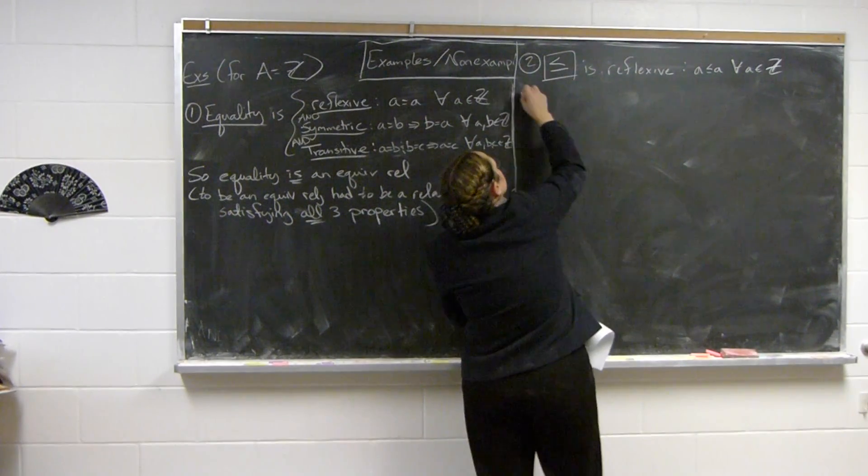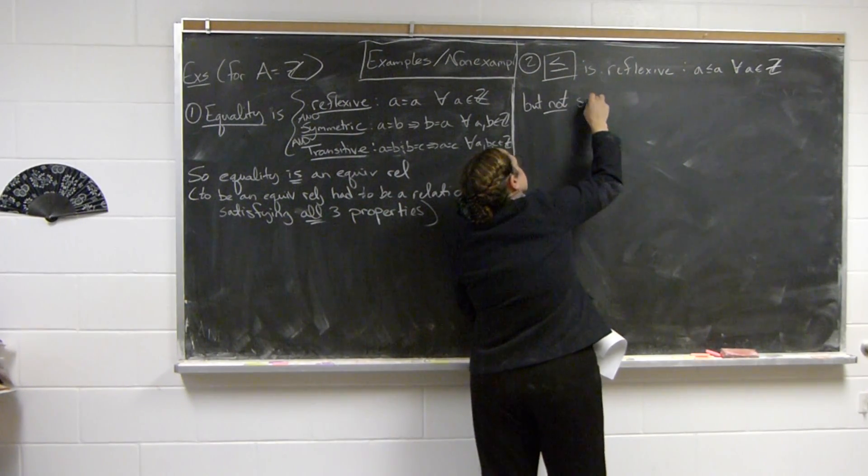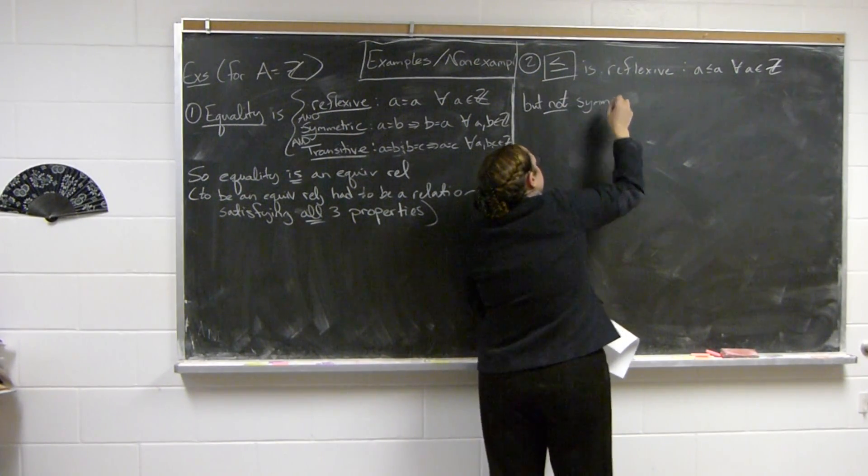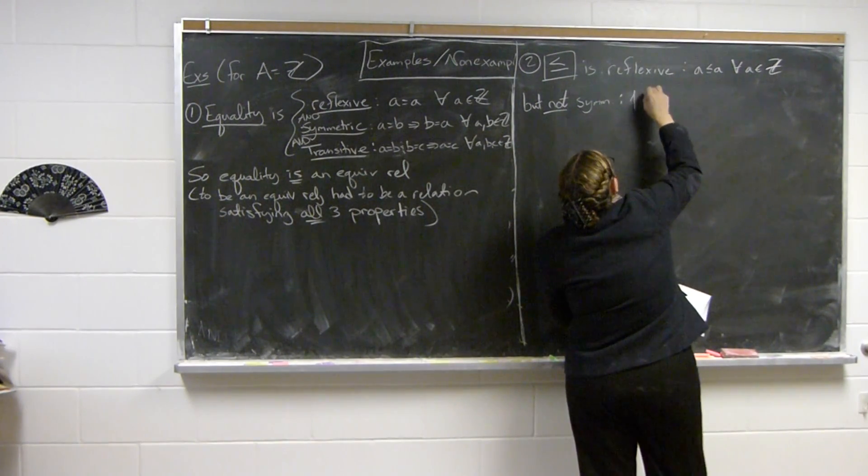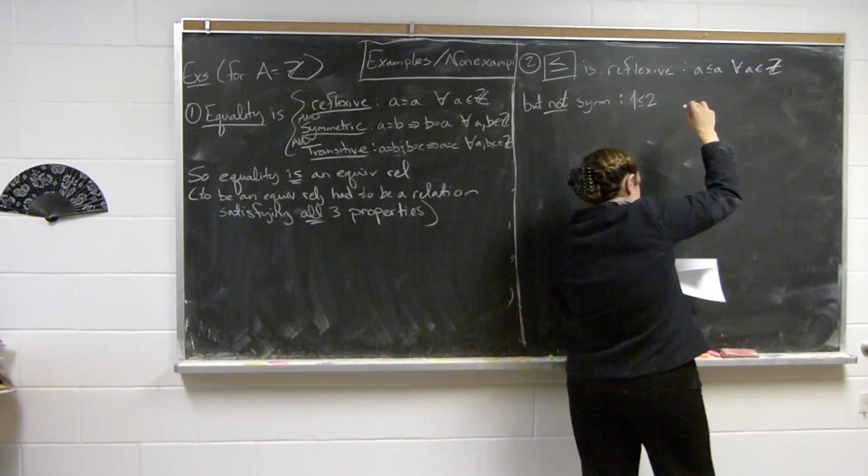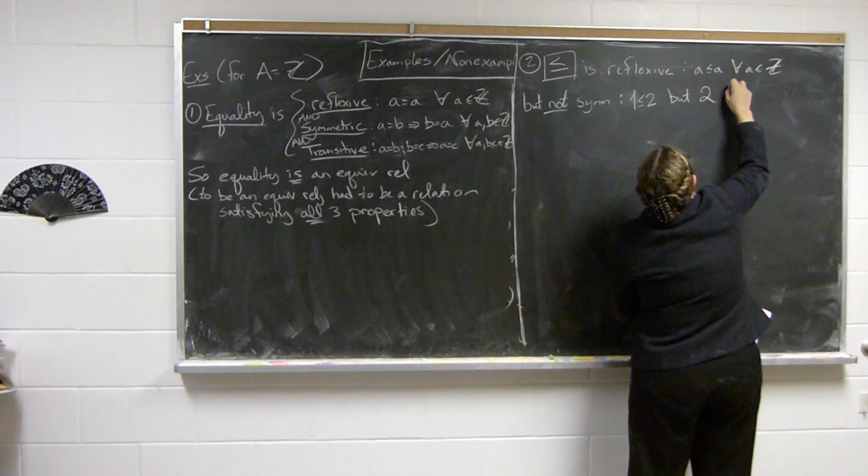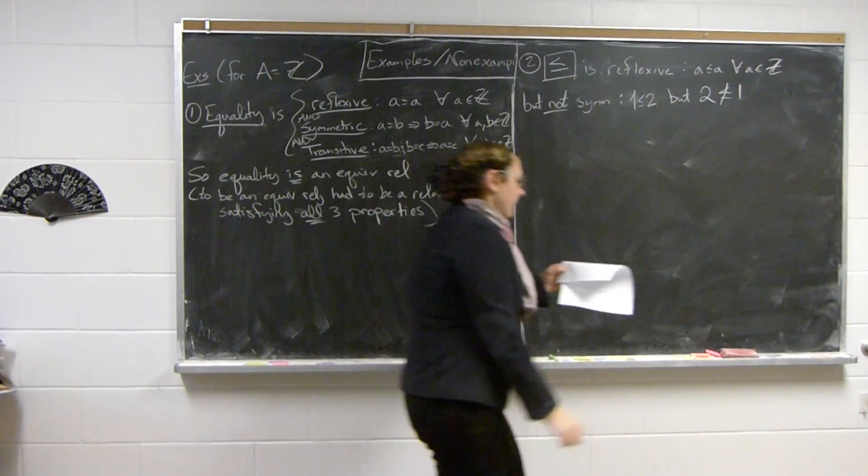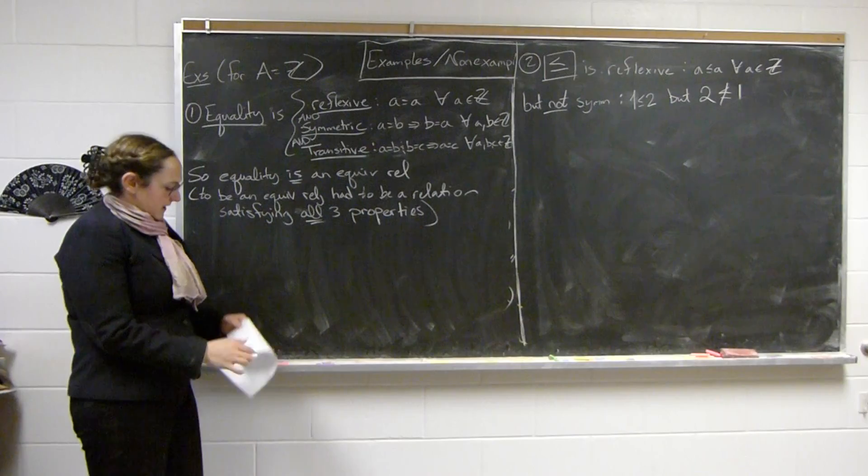But it's not symmetric. So this is a good example of not being symmetric, because one is less than or equal to two, but two is not less than or equal to one. Now this is enough to show that it's not an equivalence relation.